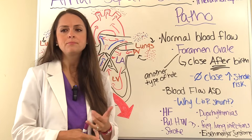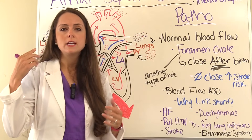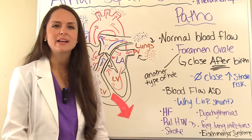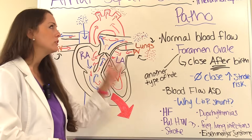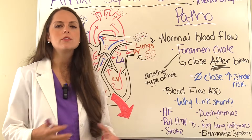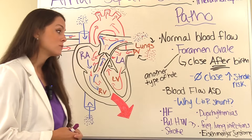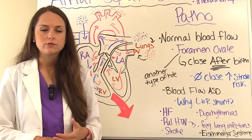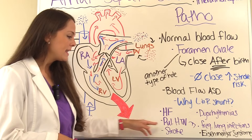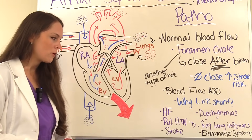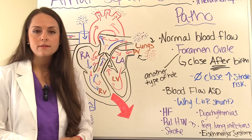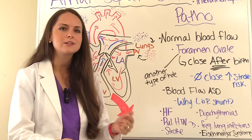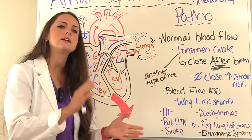Infants can have issues feeding, leading to failure to thrive and problems with growth. They'll have activity intolerance and decreased cardiac output, so you get decreased blood flow to the brain, kidneys, and all those important structures. The person can also start developing dysrhythmias like atrial fibrillation, atrial flutter, and increased risk for stroke. Many of these complications are similar to ventricular septal defects because of the same left-to-right shunting concept.